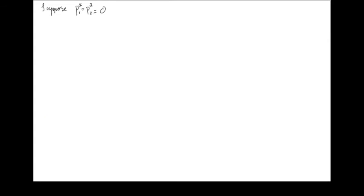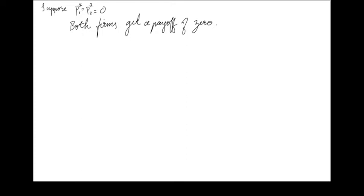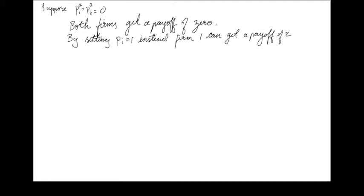Let's start with the configuration that would have been equilibrium without capacity constraints, where both firms set price equal to marginal cost, which is 0. In this case, both firms get a payoff of 0. But remember that each firm could unilaterally move their price to 1 and ensure themselves a payoff of 2, even when the other firm is setting a price of 0. So for both firms to set price equal to 0 can't be in equilibrium.